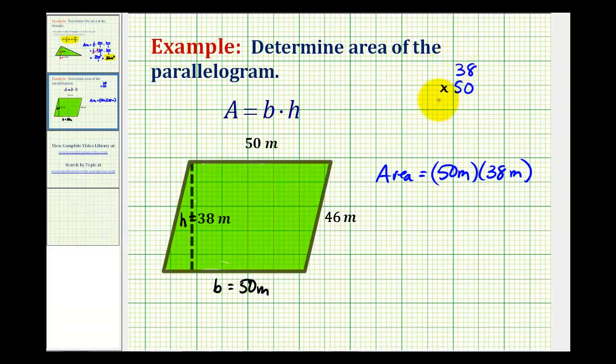Remember, when multiplying by a multiple of 10, we can just put a zero in the ones place value and then multiply by 5. So 5 times 8 would be 40, carry a 4. 5 times 3 is 15 plus 4, that would be 19. So our product is 1,900.